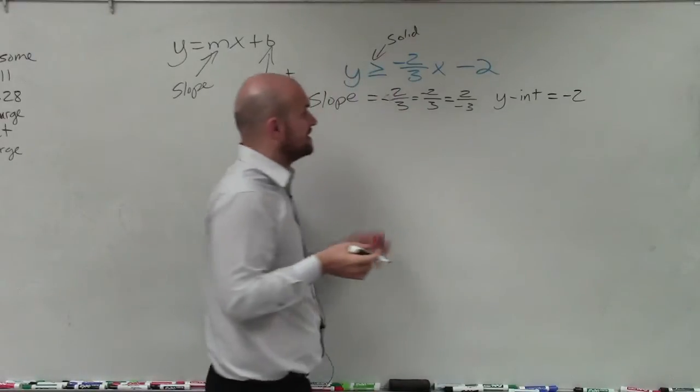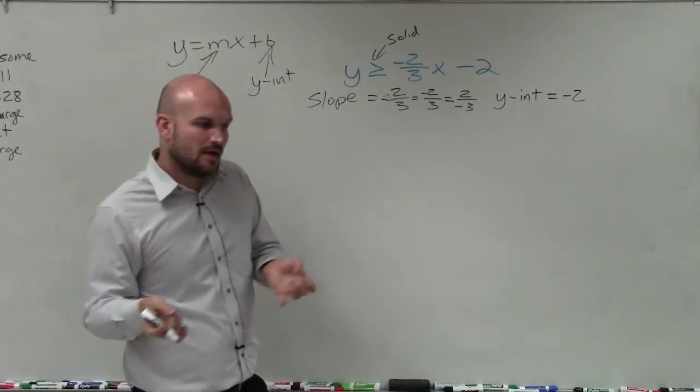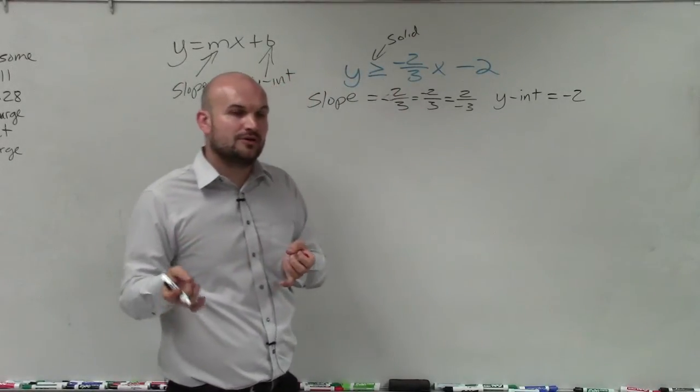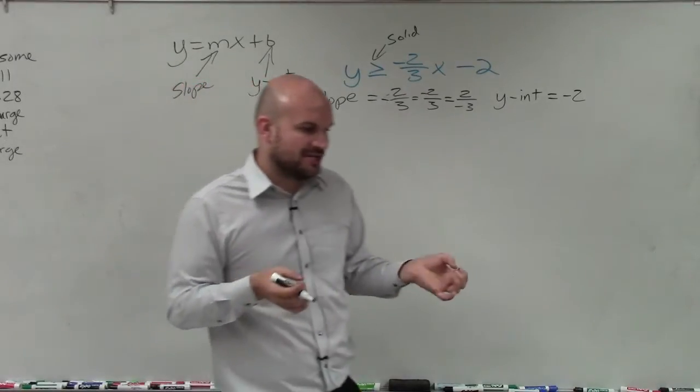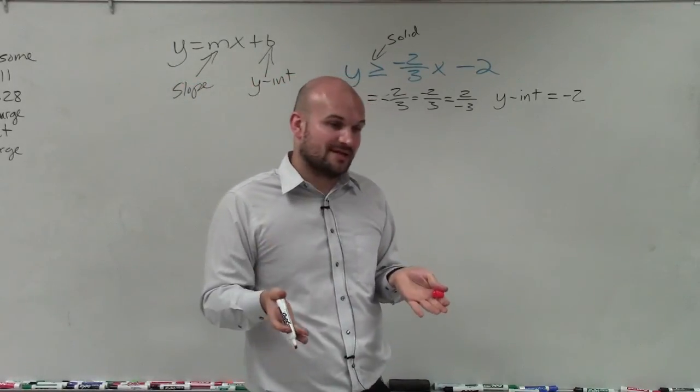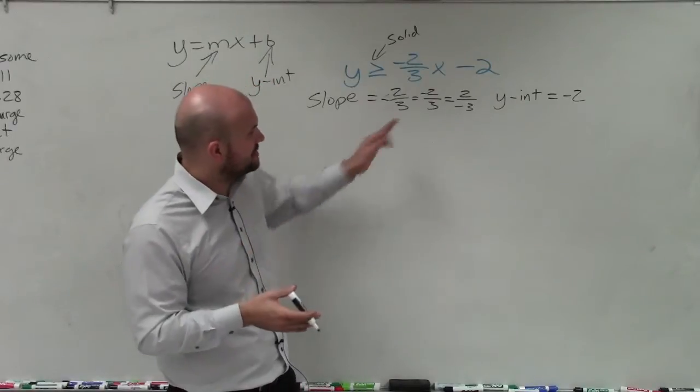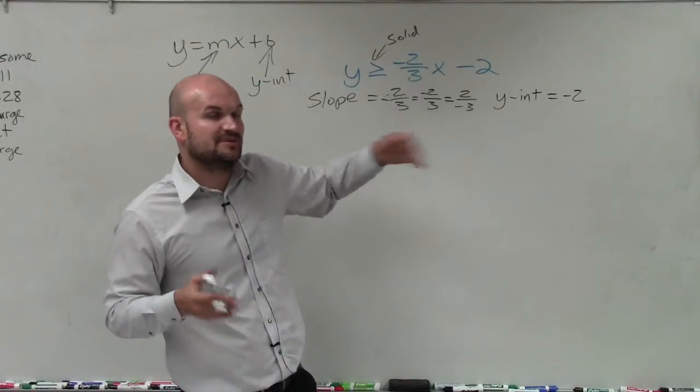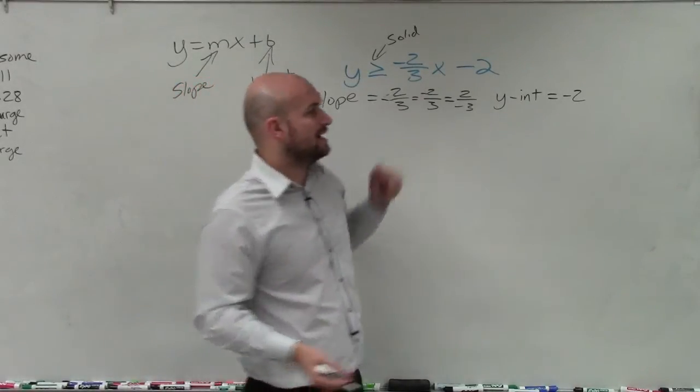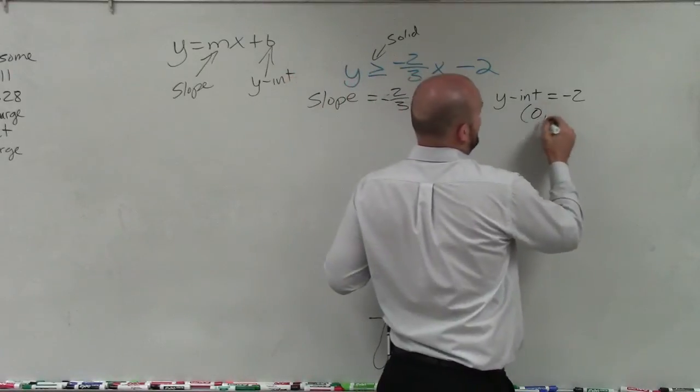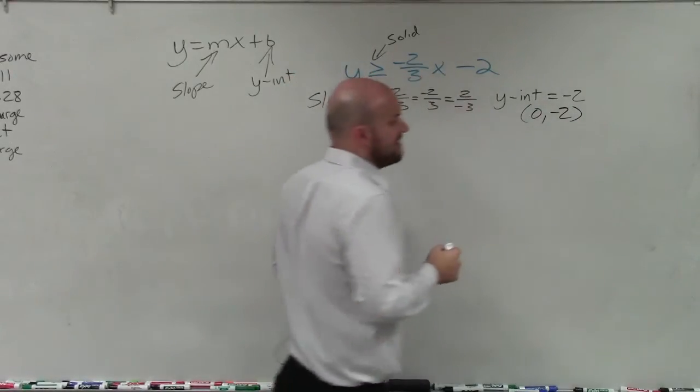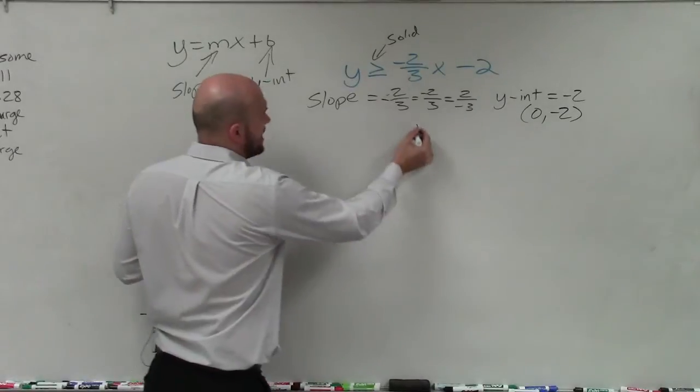But it's also important to understand that the slope represents a ratio between the change in your y, the change in the distance of y-coordinates, and the change of the distance of the x-coordinates between any two points on a line, where the y-intercept represents a point. And since it lies on the y-axis, the x value is always going to be 0.